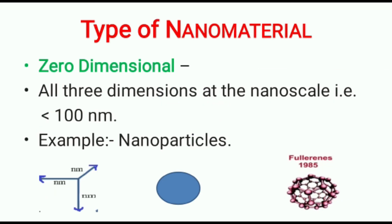Let us see the types of nanomaterials. First is zero-dimensional: when all three dimensions — length, breadth, and height — are at the nanoscale, it is known as zero-dimensional. An example is nanoparticles or fullerene. Here all dimensions are less than 100 nanometers; the diameter of fullerene is 1 nanometer.